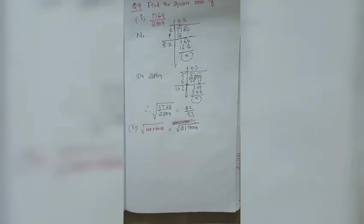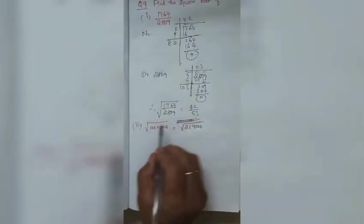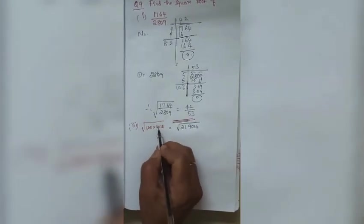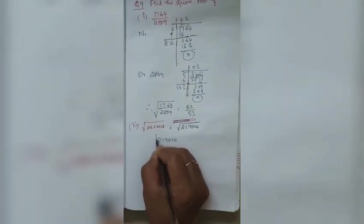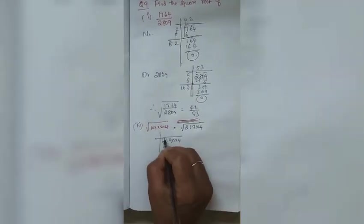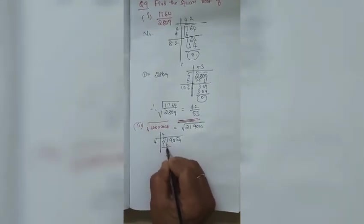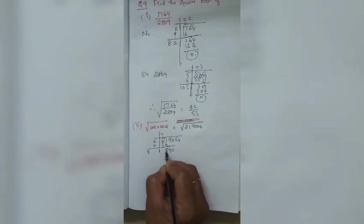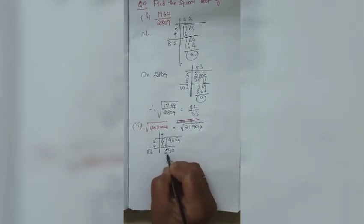The second question you try on your own the same way. For the third question, there are two numbers with a product symbol: multiply them to get 219024, then find the square root using the same long division method. Place the bar over pairs of digits. Nearest perfect square for the first group: 4² = 16.